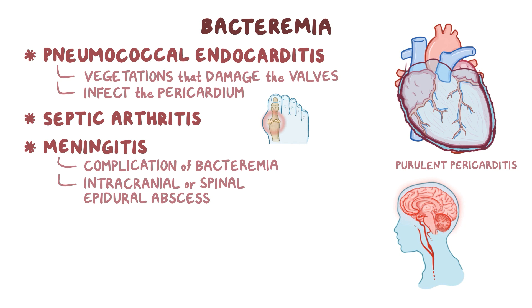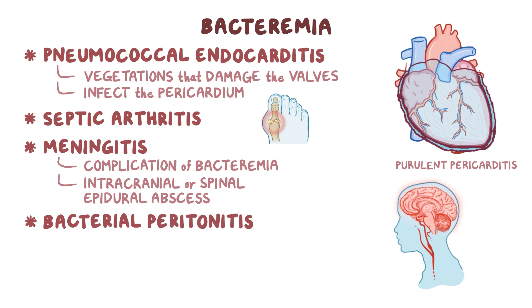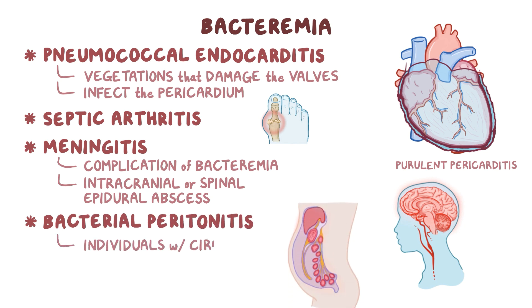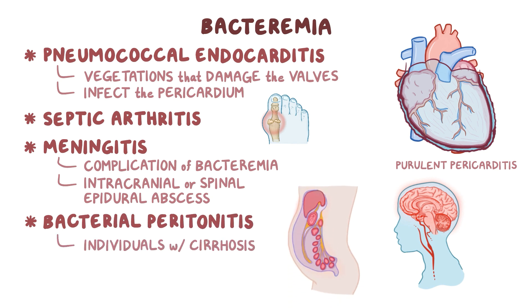Finally, strep pneumoniae can spread from the bloodstream to the peritoneum, causing spontaneous bacterial peritonitis. This is more common in individuals with cirrhosis, who develop ascites, or too much fluid in the peritoneal cavity.